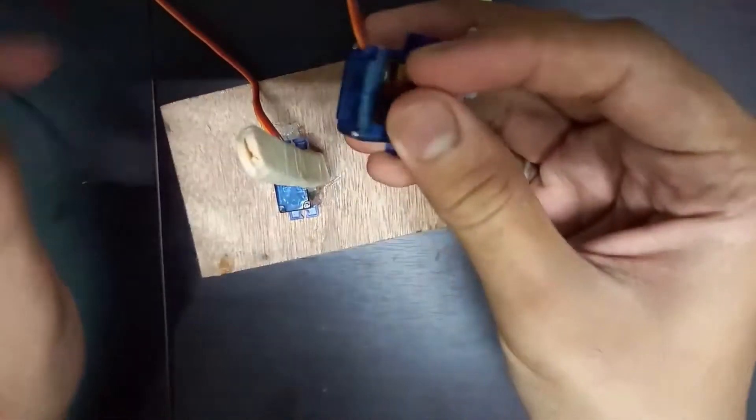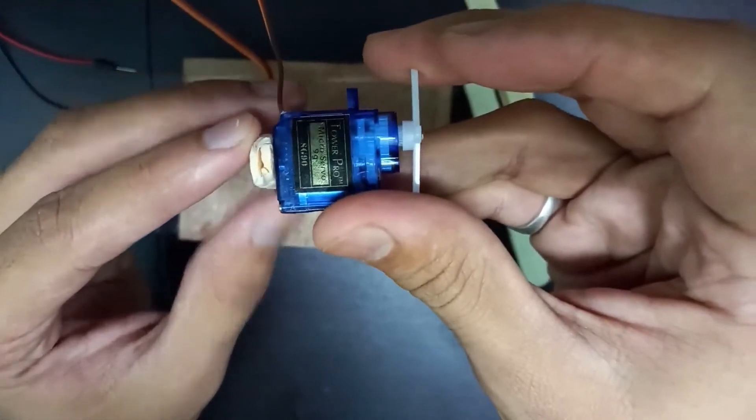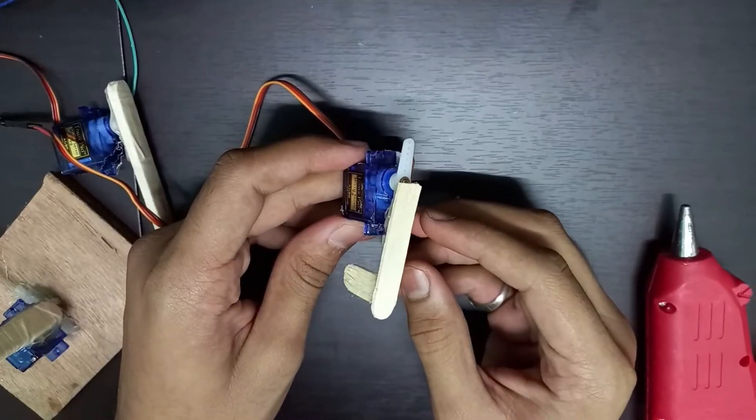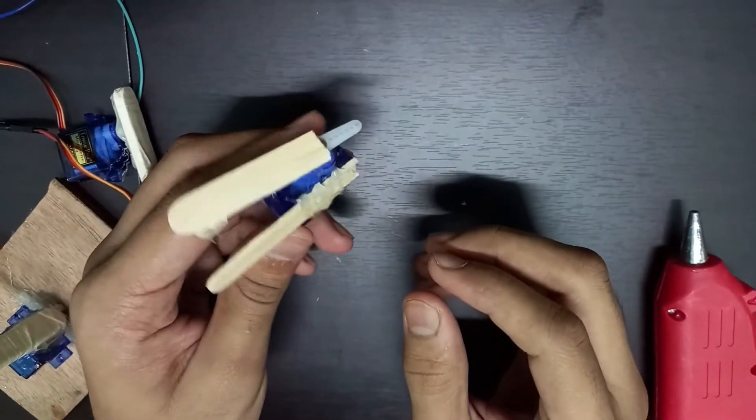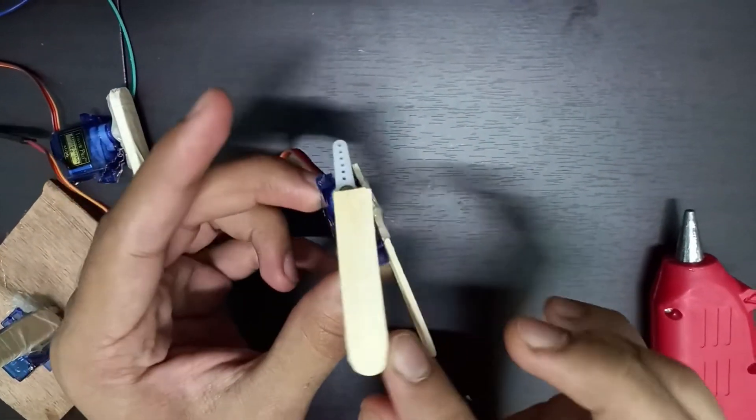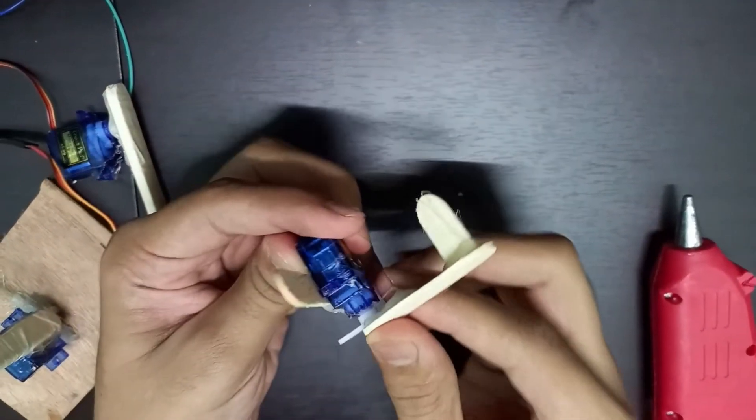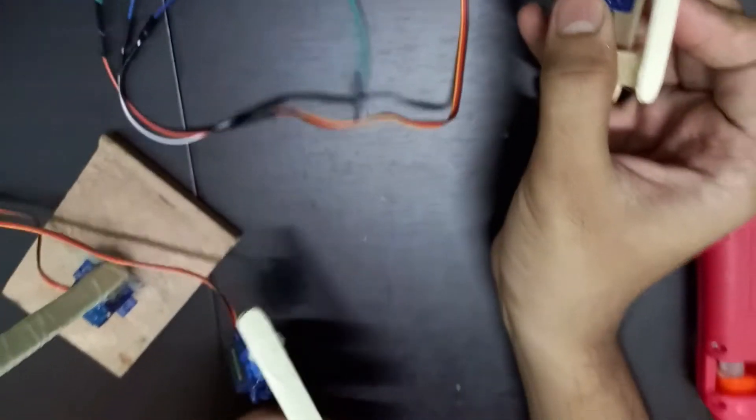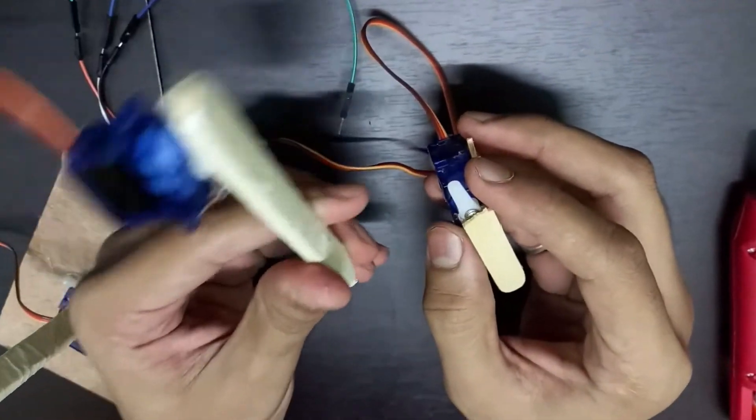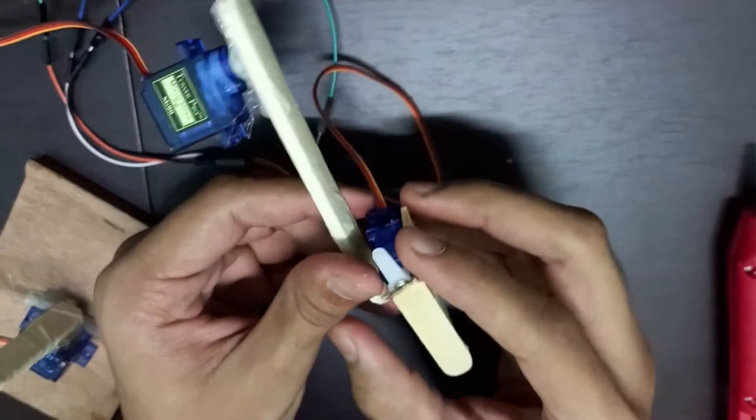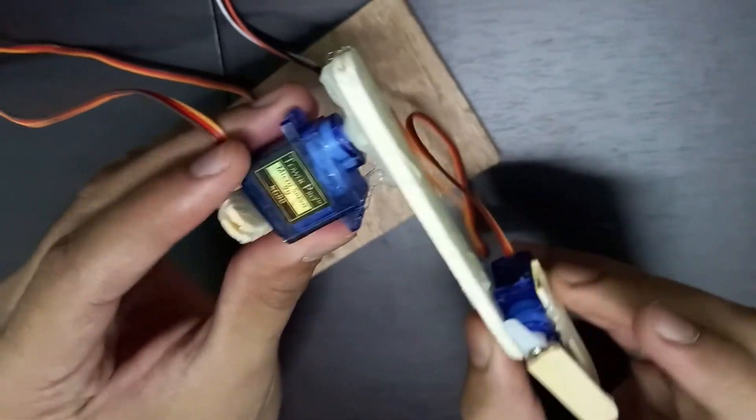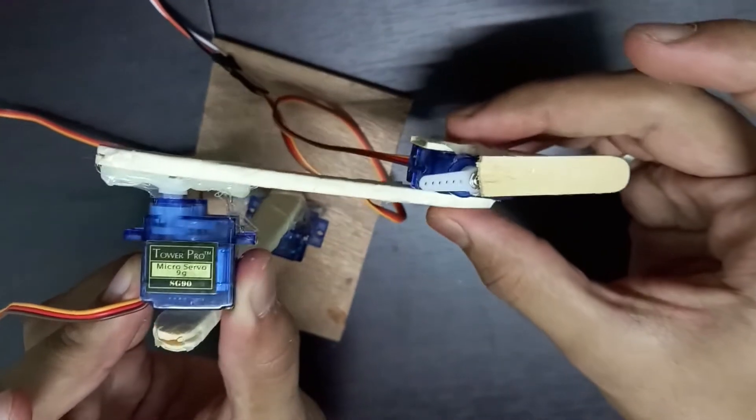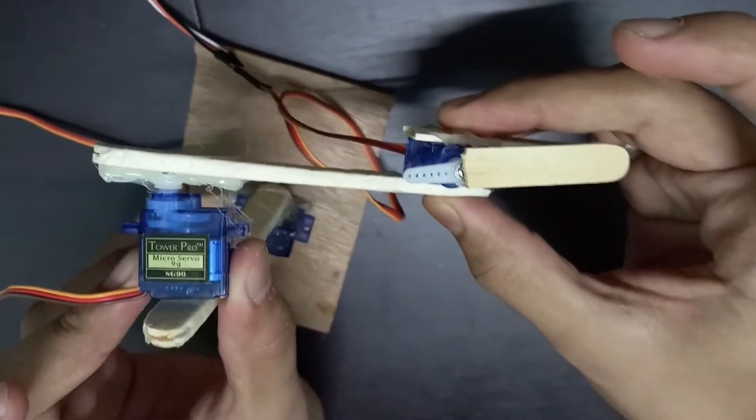Now take another servo motor to make the arm movement of the robot. We will place it on the top of the base stick. Take another servo motor to make a trap using stick with the servo motor to collect small objects. Now place servo motor to the arm stick and then arm motor to the top of the base stick. Glue it properly so it doesn't break while moving.